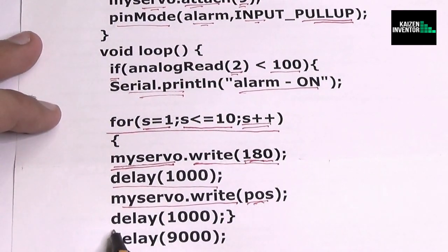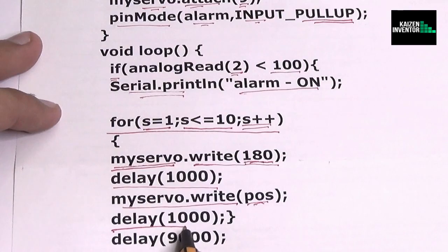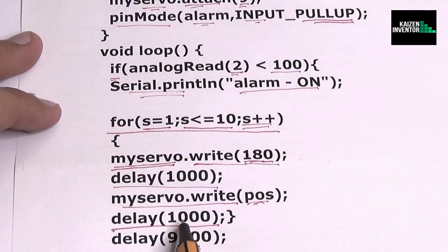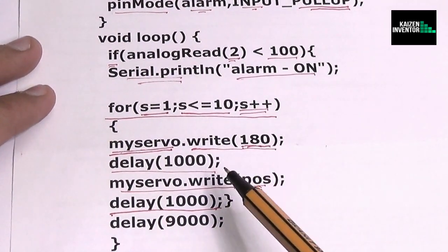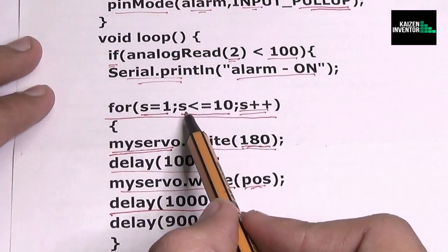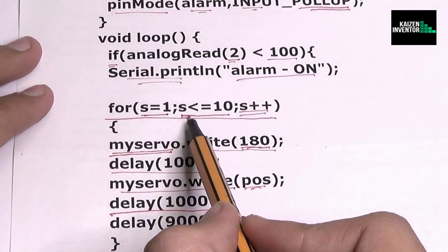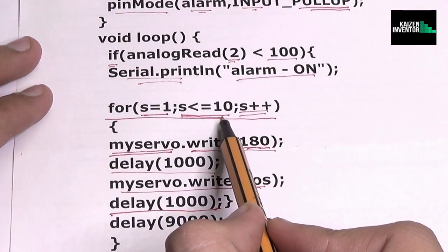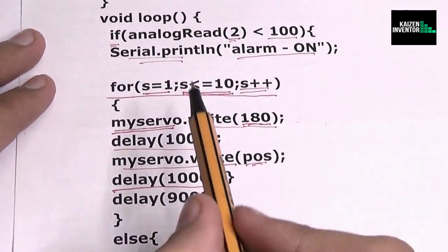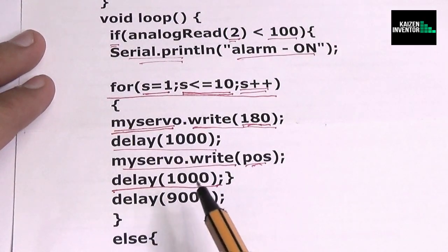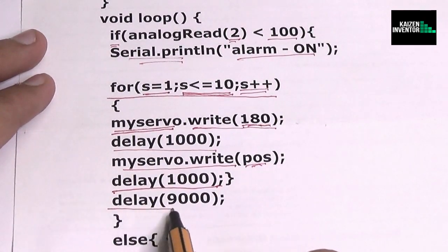So then again we would make a delay for one thousand microseconds which means one second. So now this cycle of for would repeat up to 10 as we have defined the condition that s should be equal or less than 10.